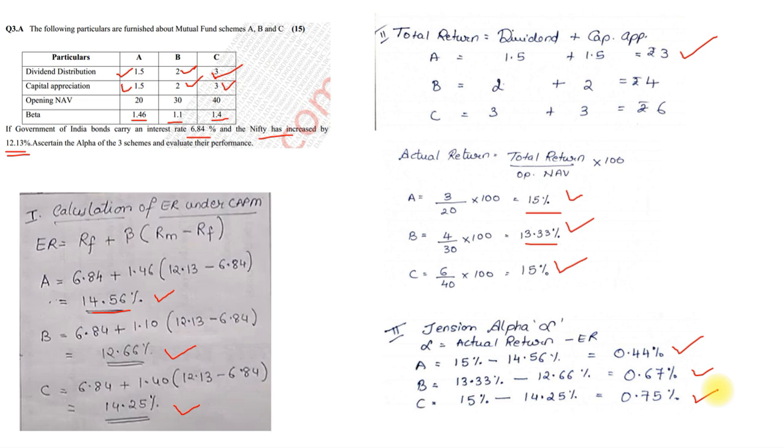So, with that, we were able to solve the first sum, which was based on calculating alpha. Now, that was the first sum, now let us check what was the second sum. Now, from the alpha point of view, you have to select which one is the better one among all. So, C is the better one, because the Jensen alpha, there's a huge difference between the expected and actual.